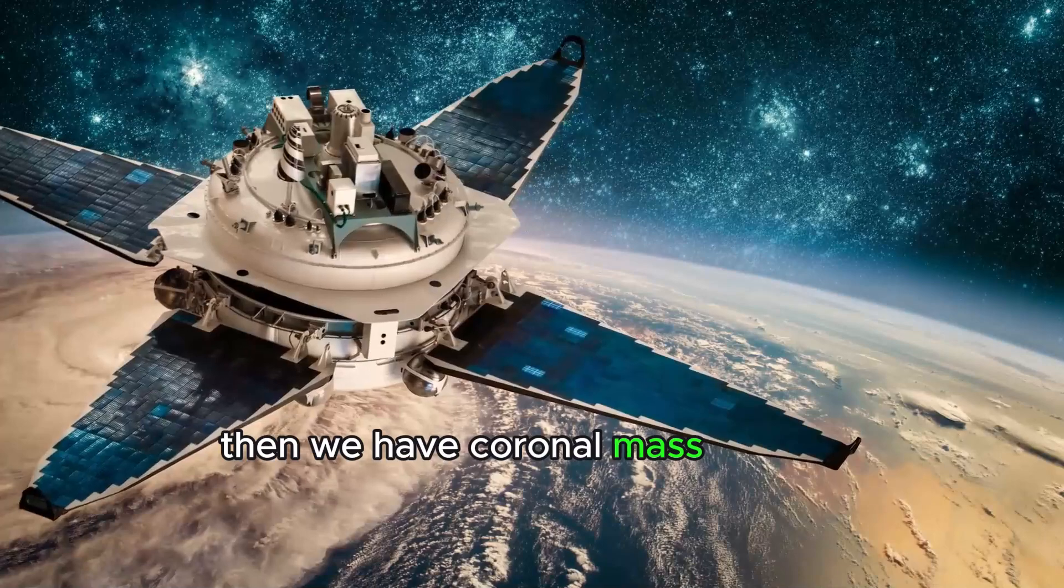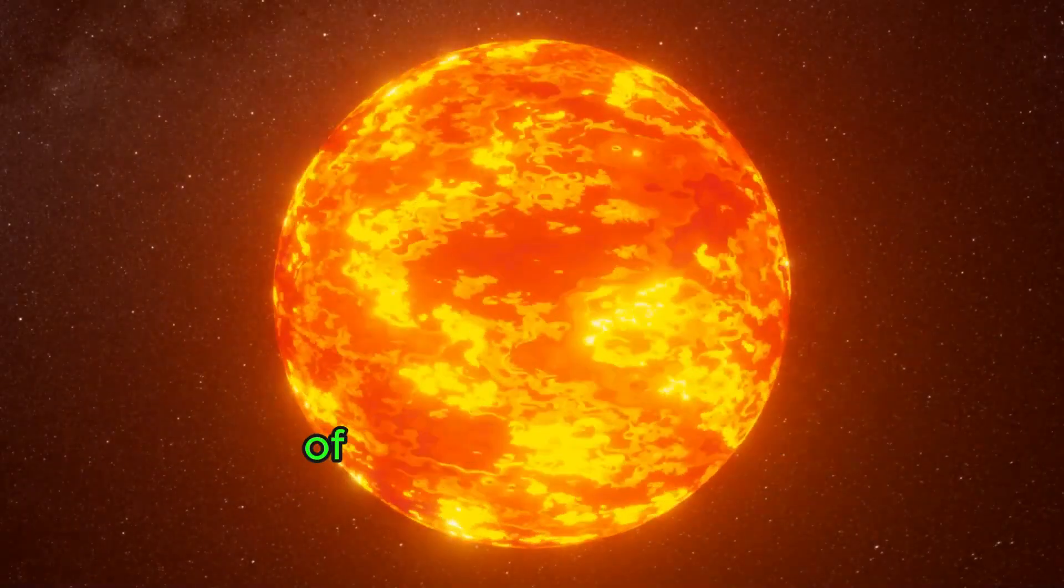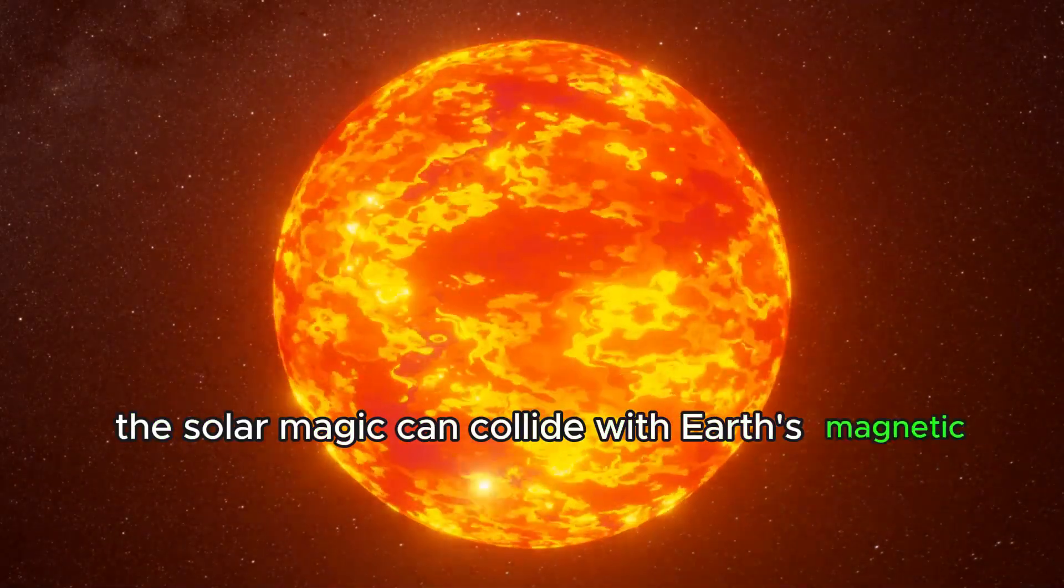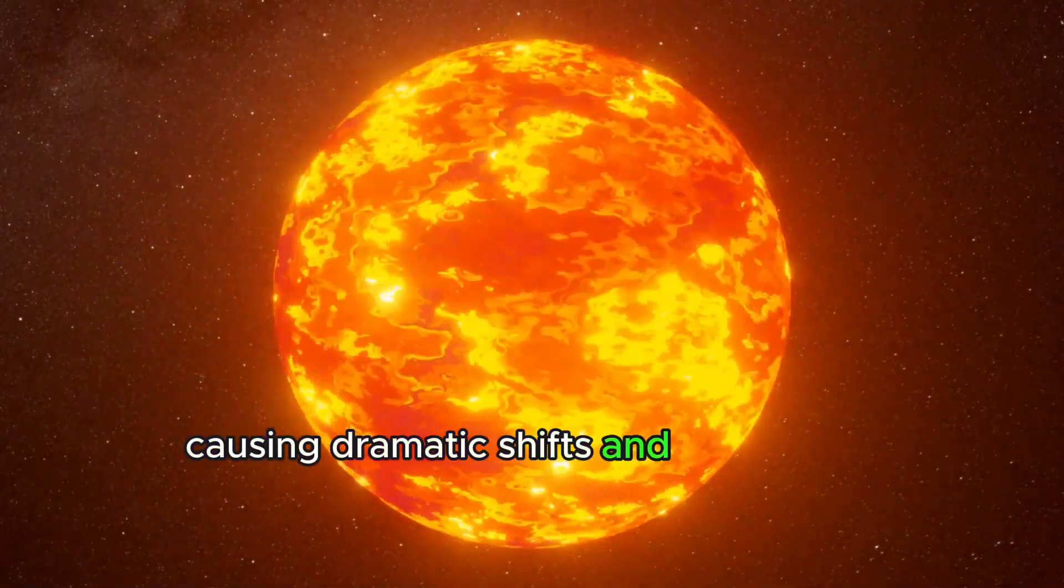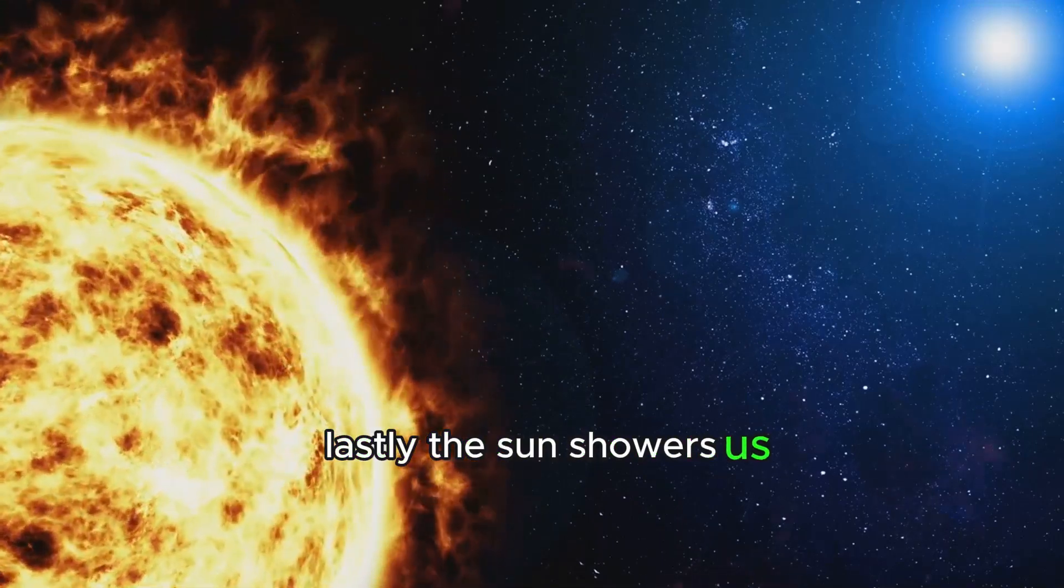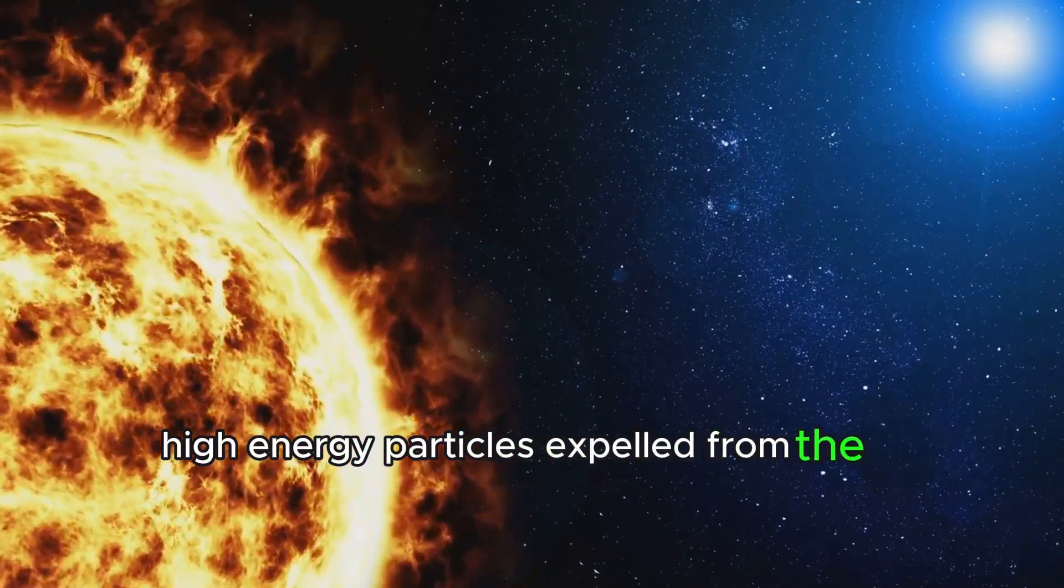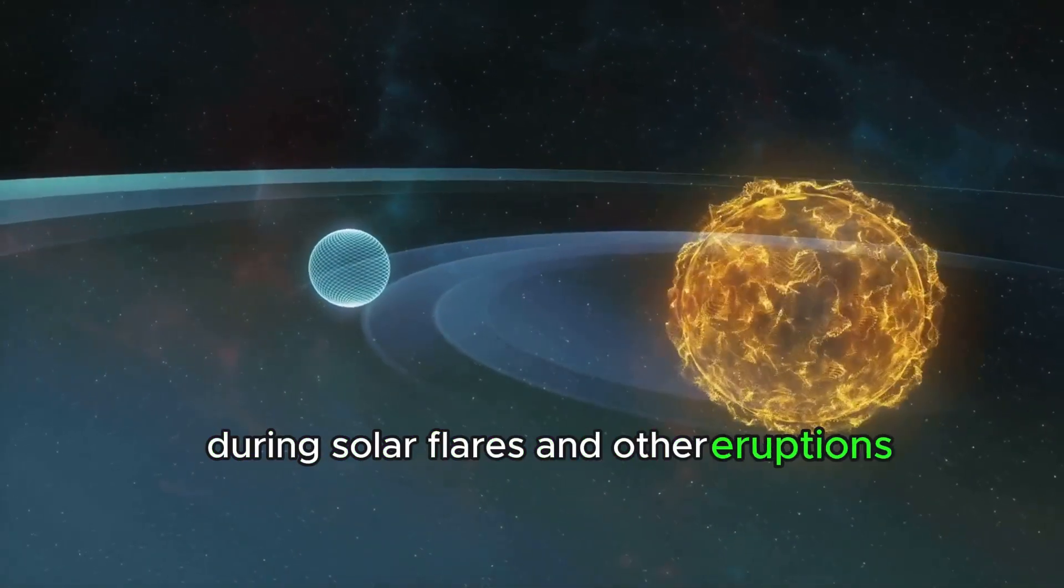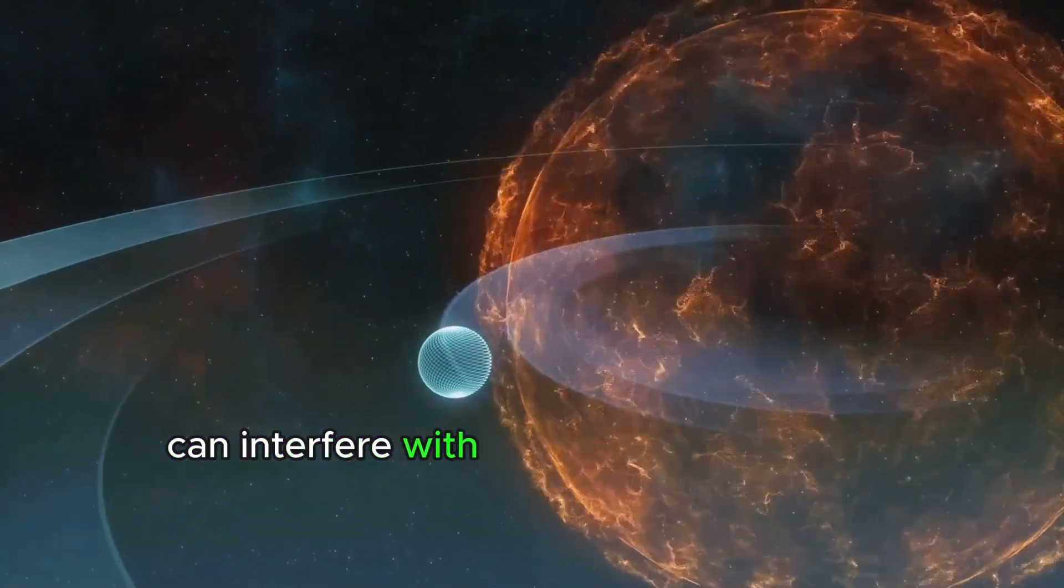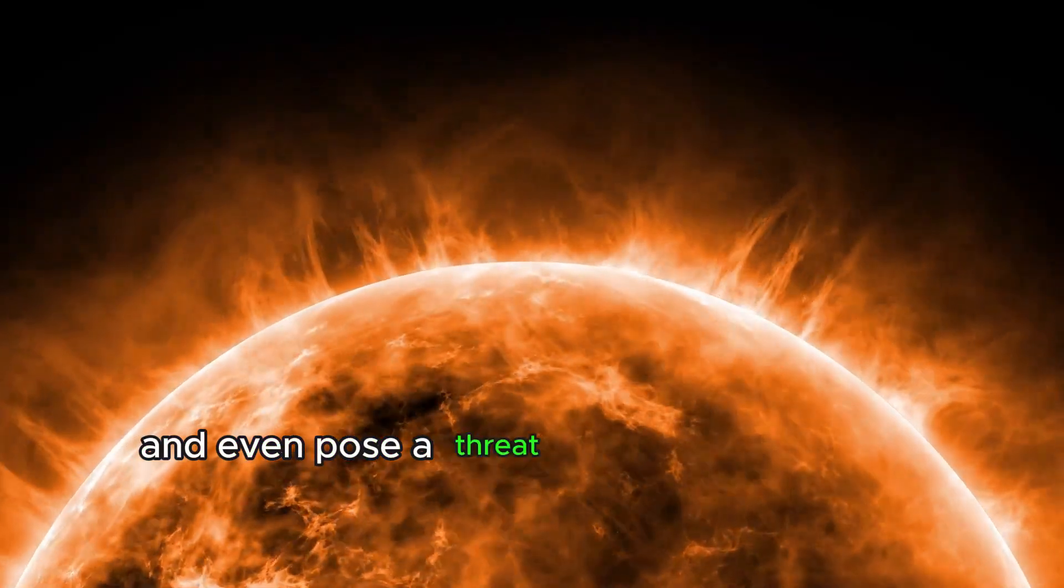Then we have coronal mass ejections, the Sun's most powerful eruptions, catapulting billions of tons of solar material into space. This solar matter can collide with Earth's magnetic field, causing dramatic shifts and disturbances. Lastly, the Sun showers us with solar energetic particles, high-energy particles expelled from the Sun during solar flares and other eruptions. The influx of these particles can interfere with satellite communications, disrupt power grids, and even pose a threat to astronauts in space.